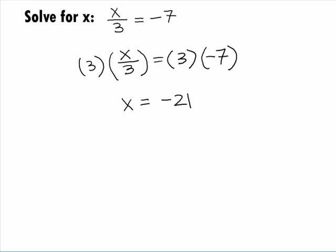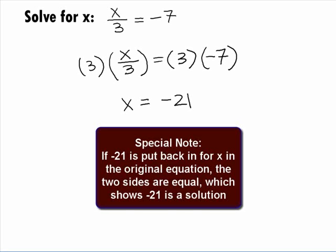So, our final answer is x equals negative 21. Note that if you put negative 21 back in for x in the original problem, the two sides will be equal, which shows that negative 21 is the solution to our problem.